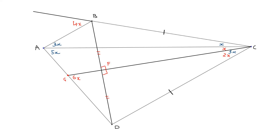Now I'm going to join point B to point G. Looking at the two triangles GBF and GDF, we can see they are congruent: both have a right angle, GF is common, and BF equals DF. From those matching sides, that means angle BGF also equals 6x, as these are matching angles in the congruent triangles GBF and GDF.